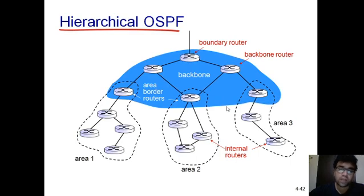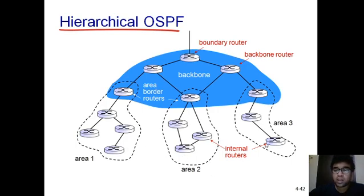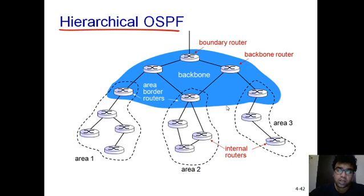In hierarchical OSPF, you must know these key things: the complete autonomous system is divided into N areas; one of those areas is the backbone area to which all other local areas are connected; local areas do not talk directly but through the backbone area; each local area has area border routers containing all information of their area, used for connecting local areas with the backbone area.